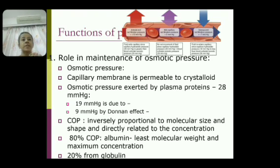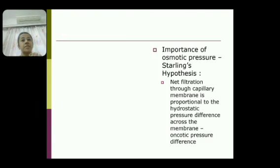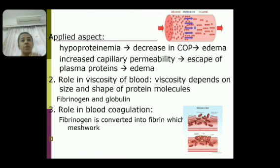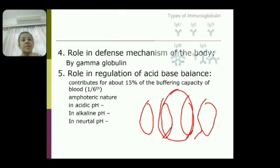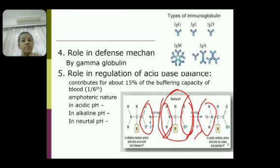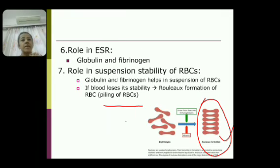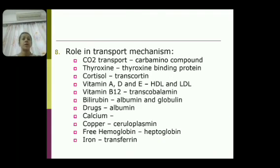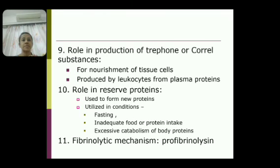To summarize, the functions of plasma proteins are: maintenance of colloid osmotic pressure, viscosity of blood, blood coagulation, defense mechanism via gamma globulins, acid-base balance, role in ESR, suspension stability of RBCs, transport mechanisms, production of trophic substances, reserve proteins, and fibrinolytic mechanism.